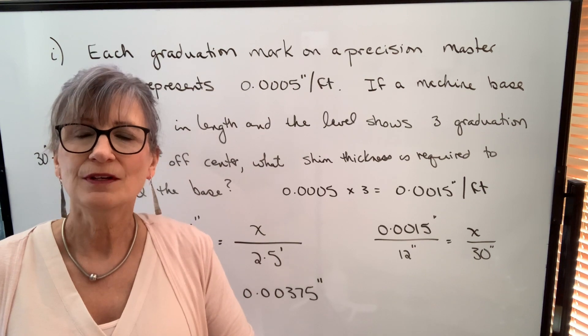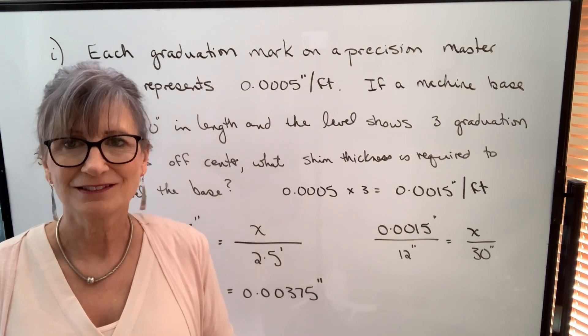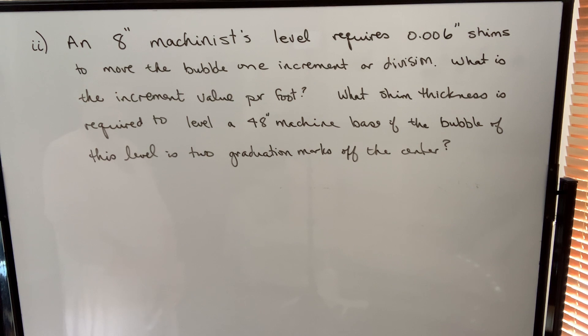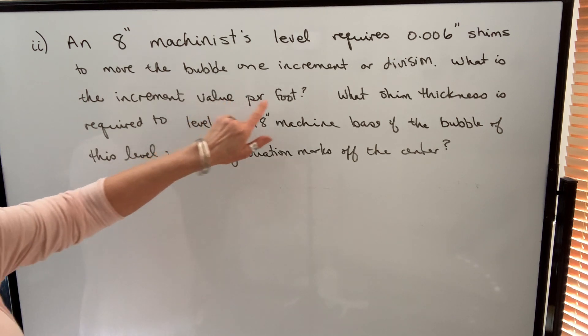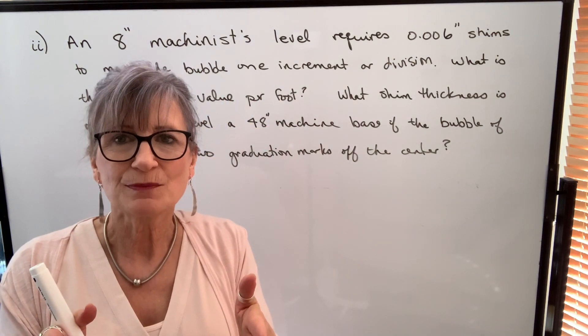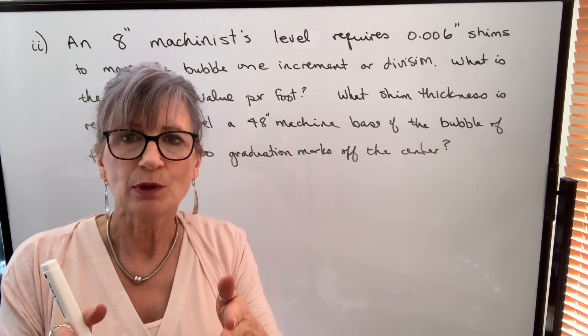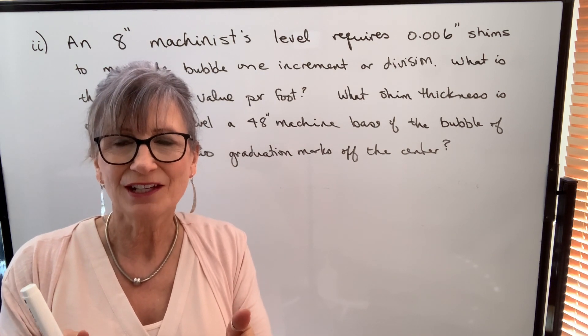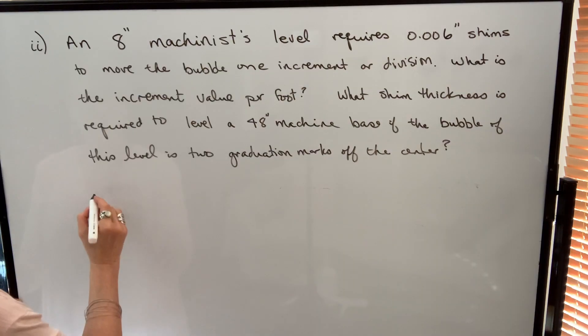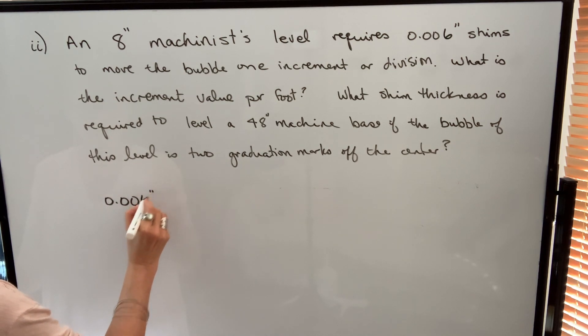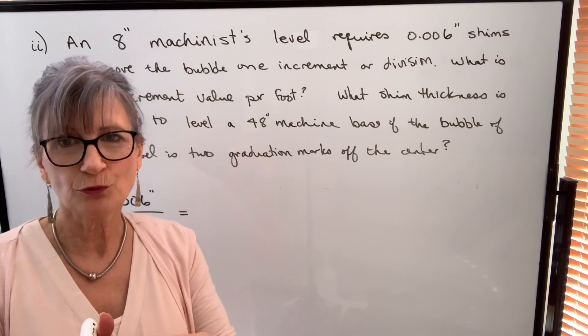Let's take a look at an example for each of the other types of levels. In our next example, we have an 8-inch machinist level, and it requires six thousandths inch shims to move the bubble one increment or division. So what we're going to do first is find the increment value per foot. We're putting shims under the actual level to move that bubble one increment, which means we have to take the length of the level into account.